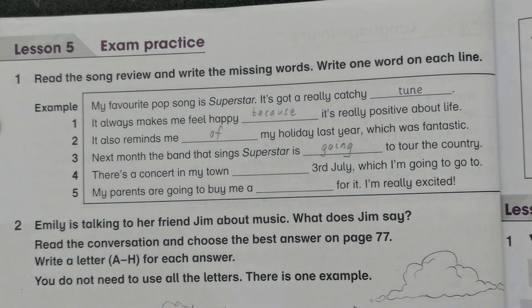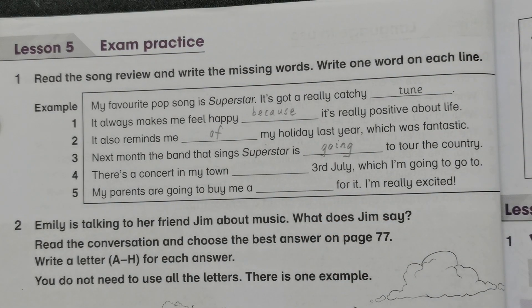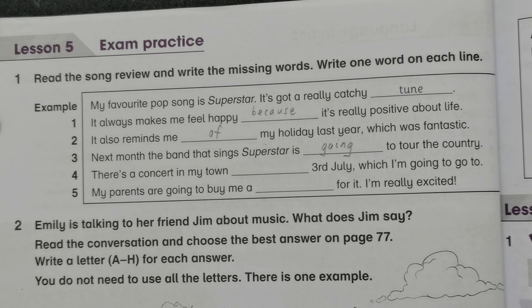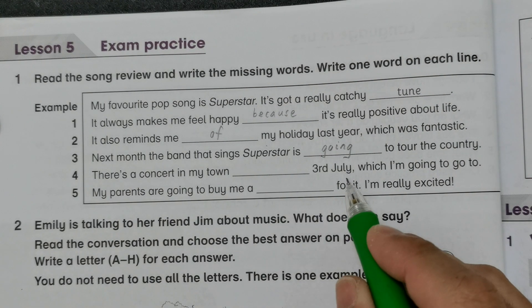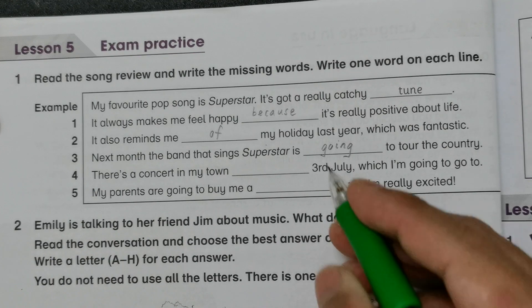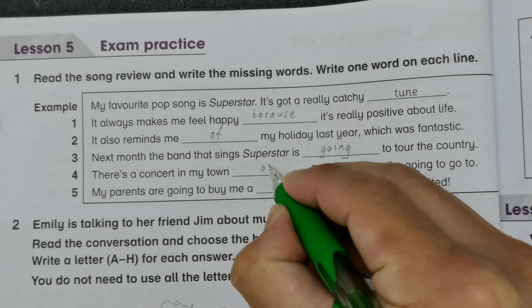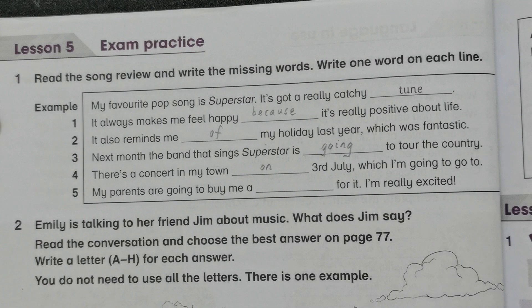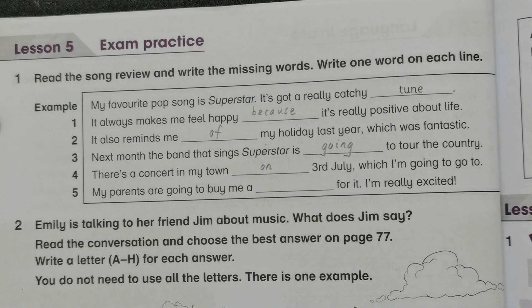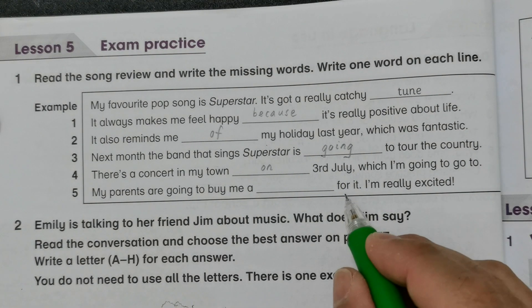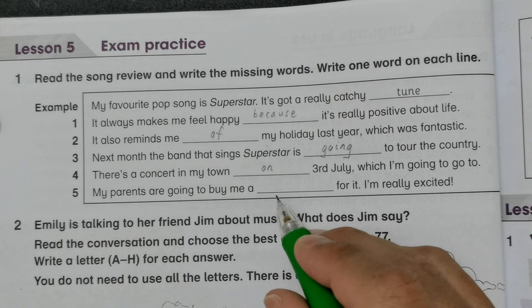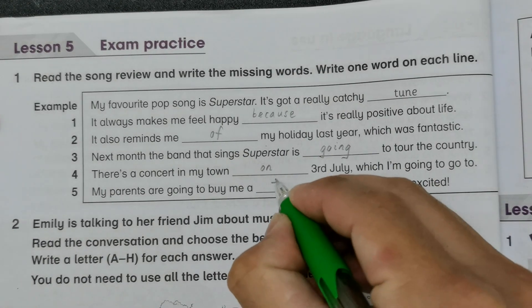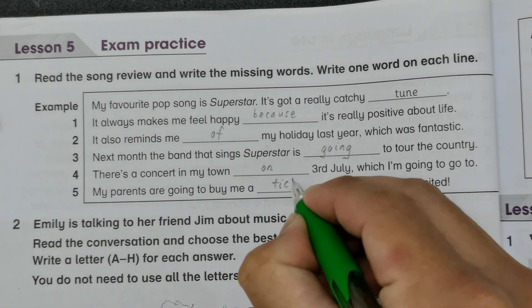Number four: 'There's a concert in my town on 3rd July,' so the missing word is 'on' — it refers to a date. Number five: 'My parents are going to buy me a...' — the missing word is 'ticket,' spelled T-I-C-K-E-T.